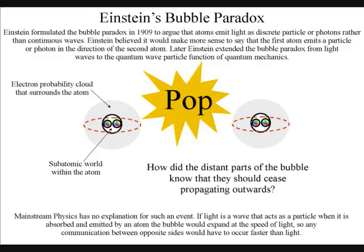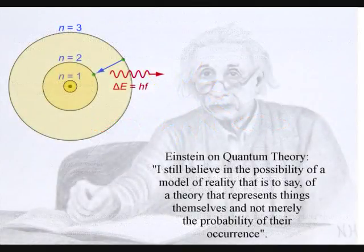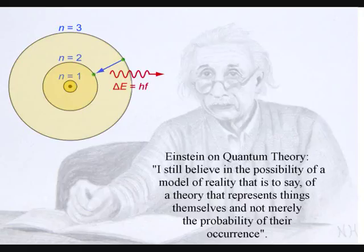Einstein believed it would make more sense to say that the first atom emits a particle or photon in the direction of the second atom. Later, Einstein extended the bubble paradox from light waves to the quantum wave particle function of quantum mechanics.